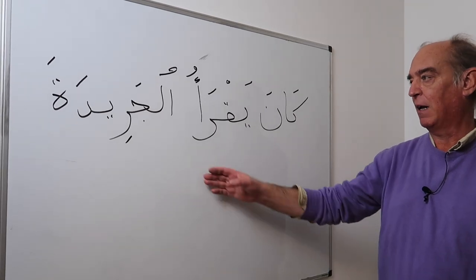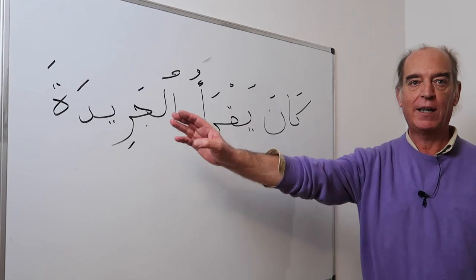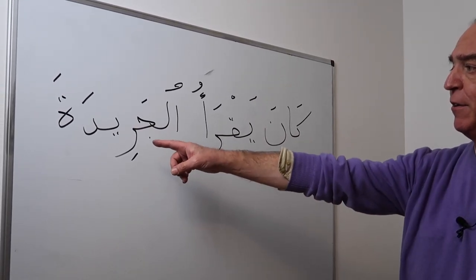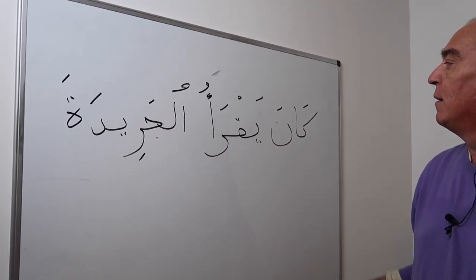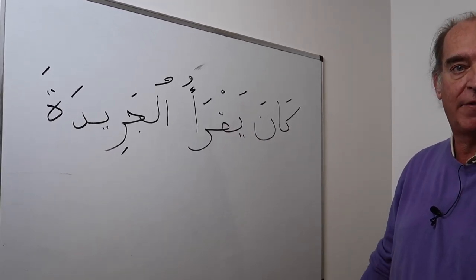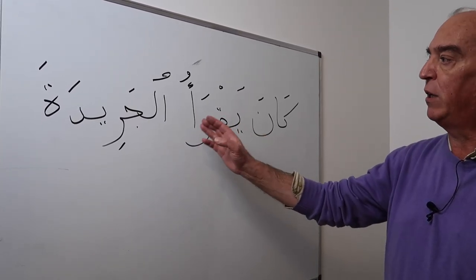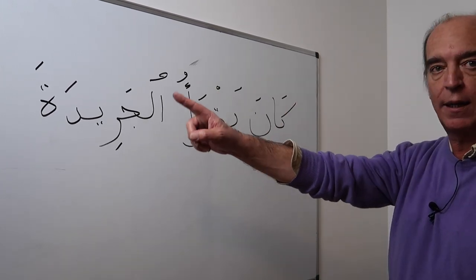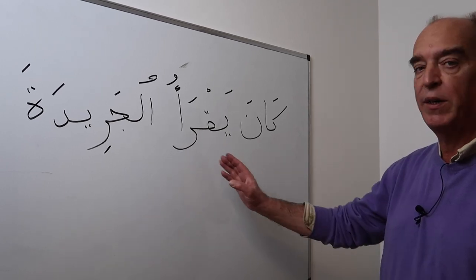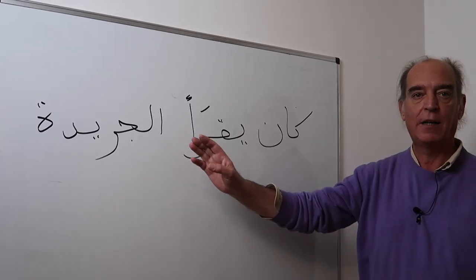Here is an example for older people: kana yaqra'u al-jaridata. Qara'a, yaqra'u means to read; jarida is newspaper. Using kana followed by the present tense gives us the imperfect: he was reading, or he used to read. So kana yaqra'u al-jaridata means 'he used to read the newspaper' or 'he was reading the newspaper.' Without final vowels, you may hear: kan yaqra'u al-jaridata.